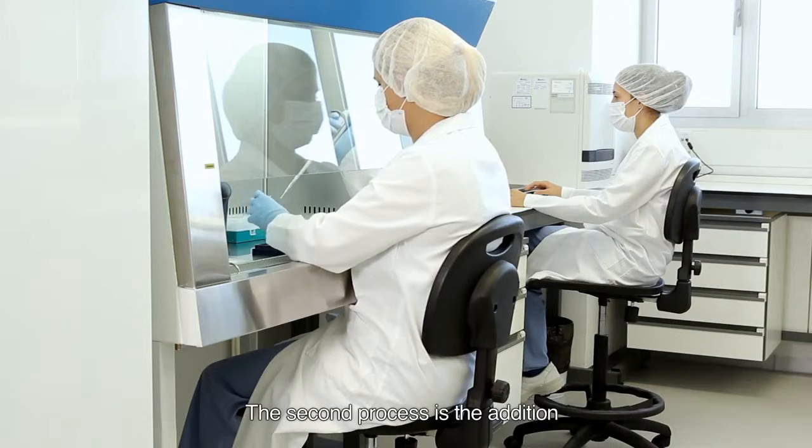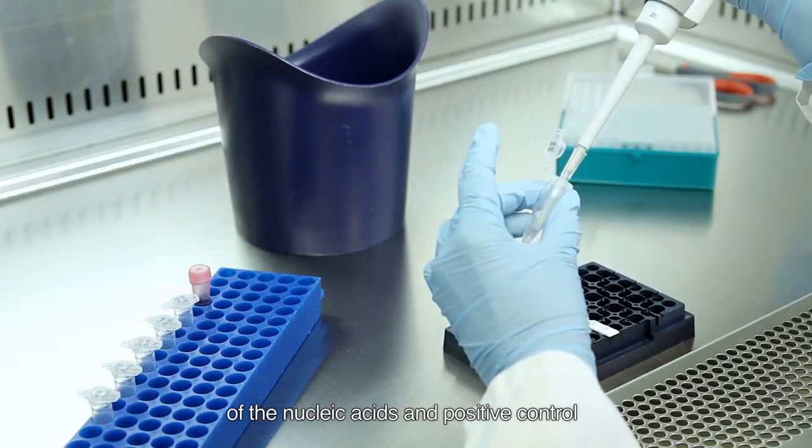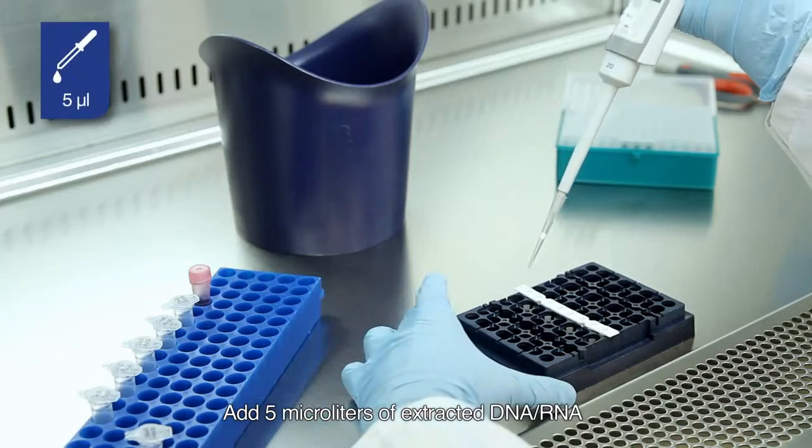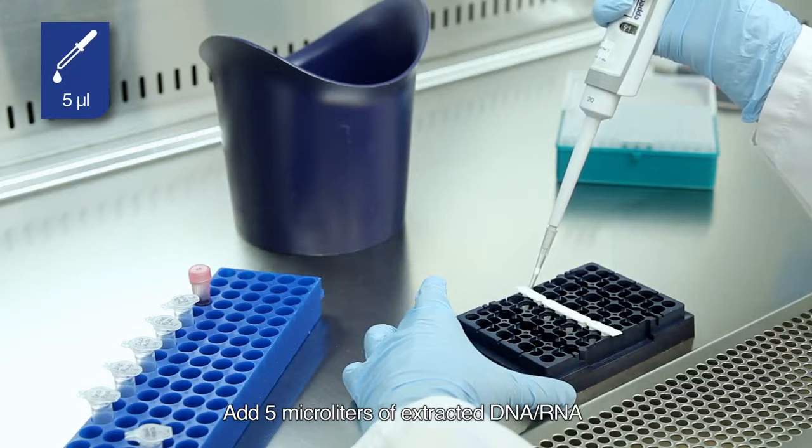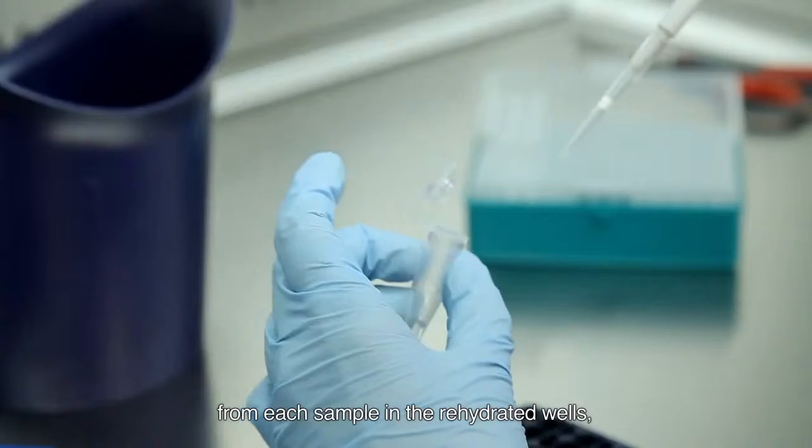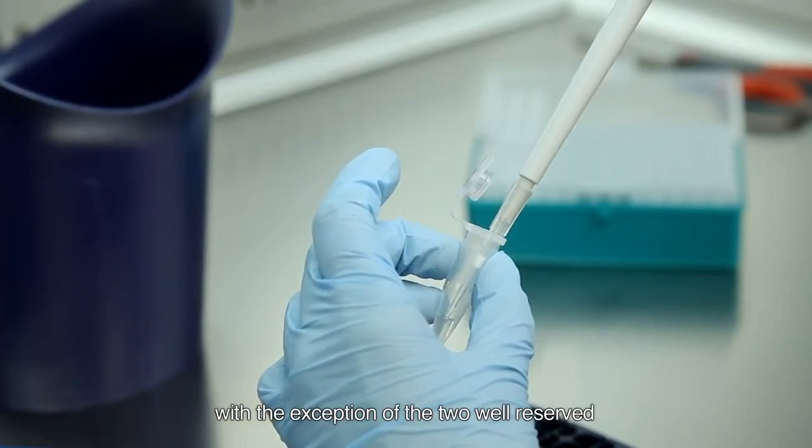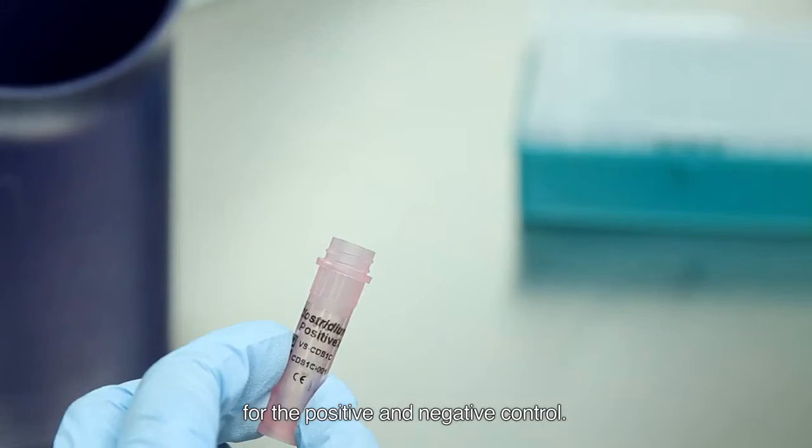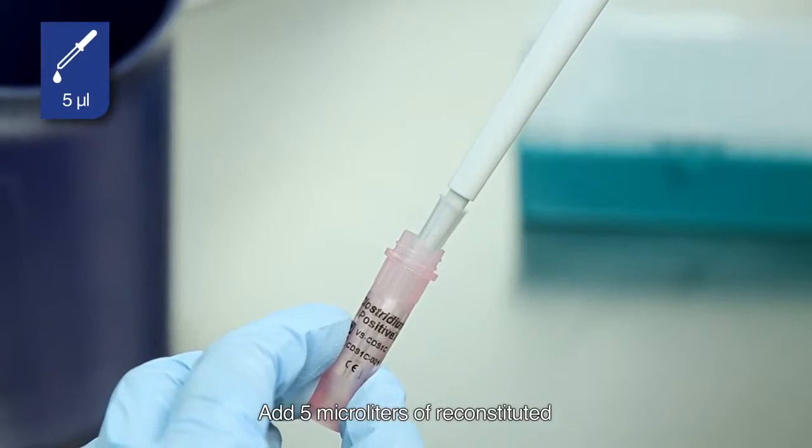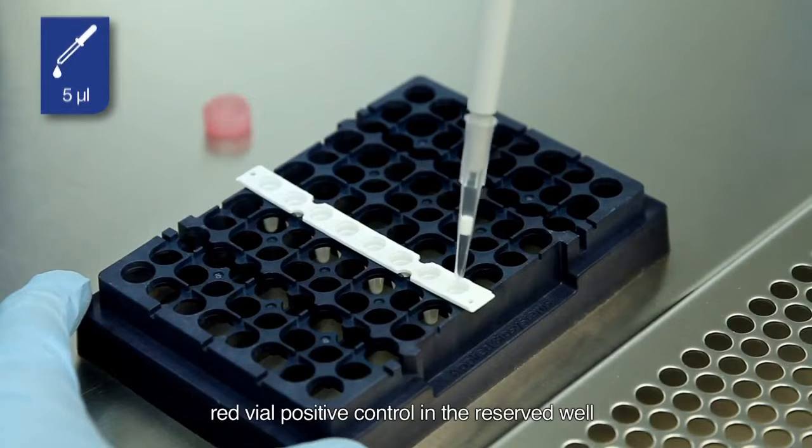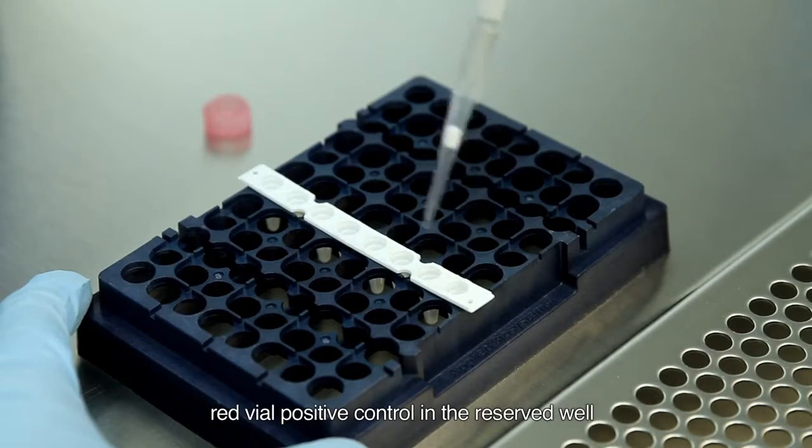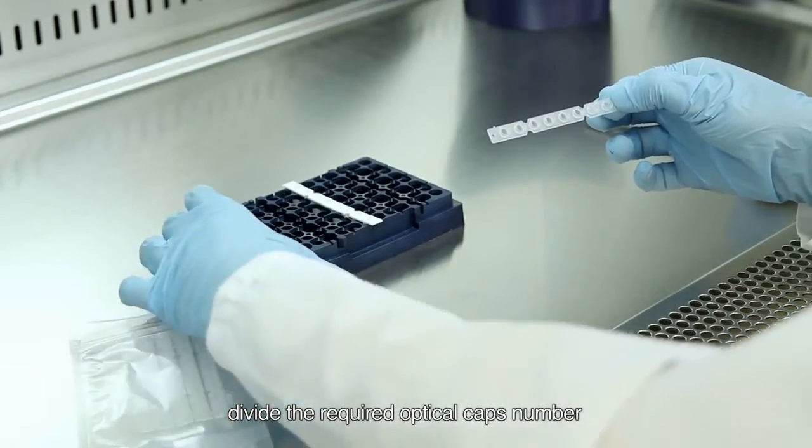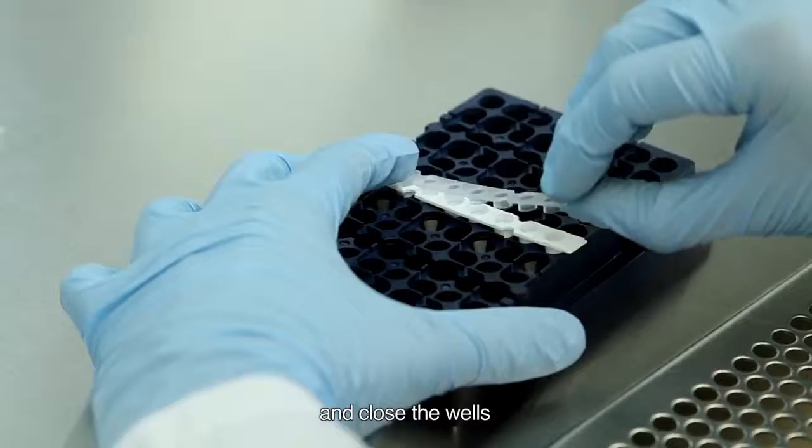The second process is the addition of the nucleic acids and positive control to the rehydrated wells. Add 5 µl of extracted DNA RNA from each sample in the rehydrated wells with the exception of the two wells reserved for the positive and negative control. Add 5 µl of reconstituted red vial positive control in the reserved well for positive control. To finish, divide the required optical caps number and close the wells.